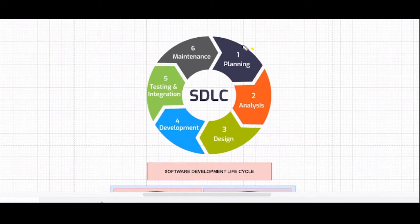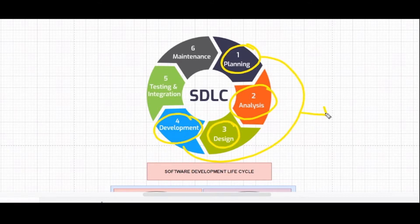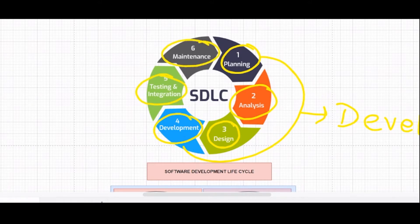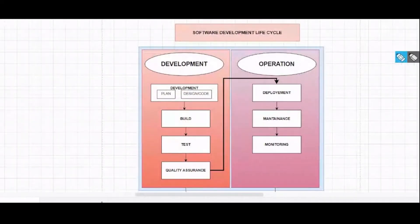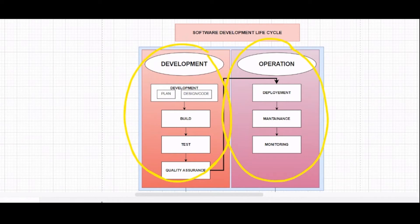This is how a Software Development Lifecycle looks. It includes the planning phase, the analysis phase, the designing phase, and the development phase — these four parts combine into the whole development portion. Then we have the testing and integration phase and the maintenance phase. In older days, this was divided into the development part and the operational part.